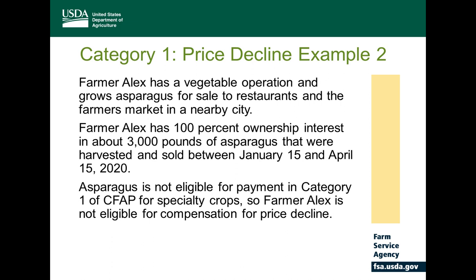Category one example two: Farmer Alex grows asparagus for sale at a farmer's market, with 100% ownership in 3,000 pounds sold during the applicable time period. However, asparagus is not eligible under category one for CFAP. Alex will not be eligible for the price decline category one on asparagus, and there will be no application for those 3,000 pounds of sold asparagus under this category.